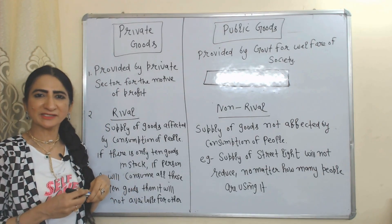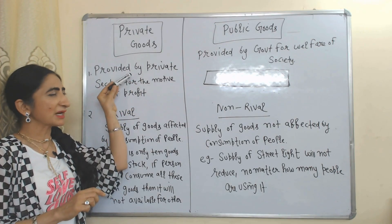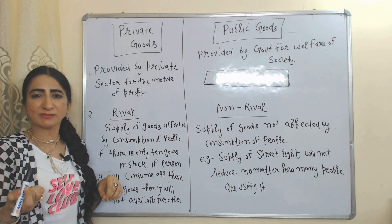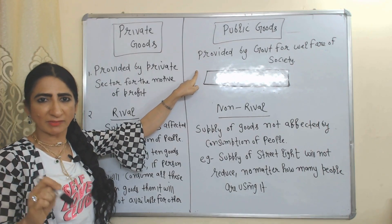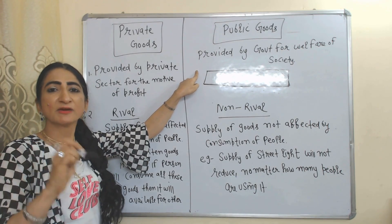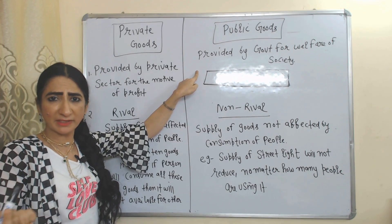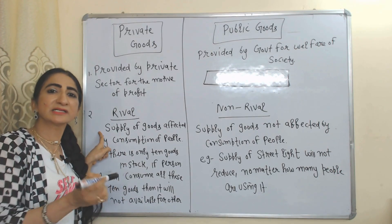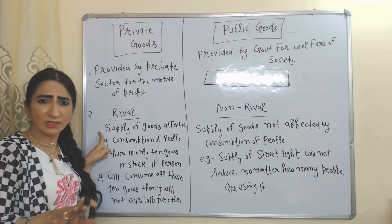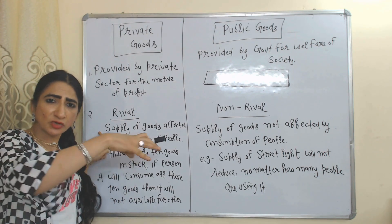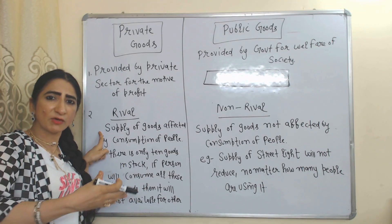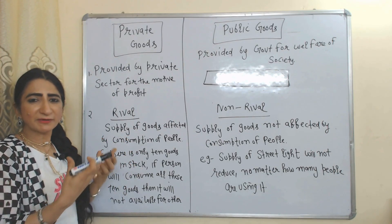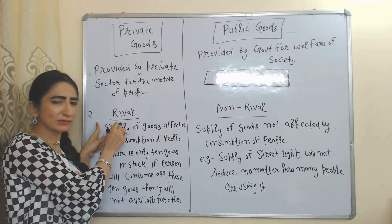Now the difference between private goods and public goods. Private goods are provided by the private sector for the motive of earning a profit — for example, AC, mobile, car. Public goods are provided by government for the welfare of society — for example, national defense, public power, public roads. Private goods are rival, meaning the supply of private goods is affected by consumption. For example, if there are only 10 goods in stock and person A consumes all 10, they will not be available for others. That's why private goods are rival.